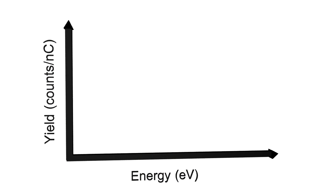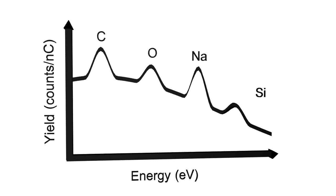The energy of the scattered ions depends on the mass of the target, so there are distinct peaks in the energy spectrum of the backscattered ions. These peaks give information about the sample's elemental composition.